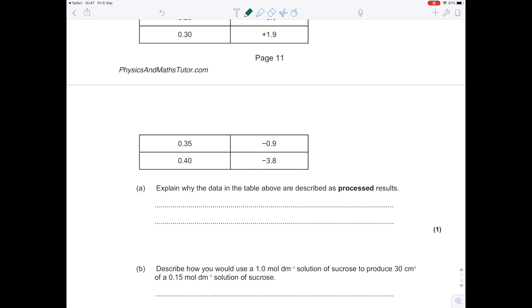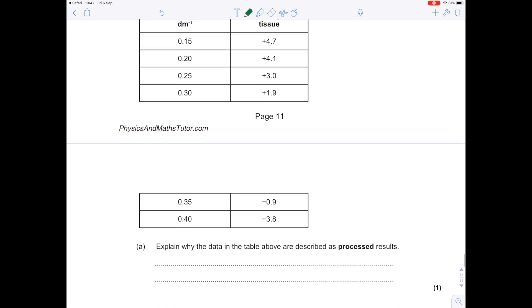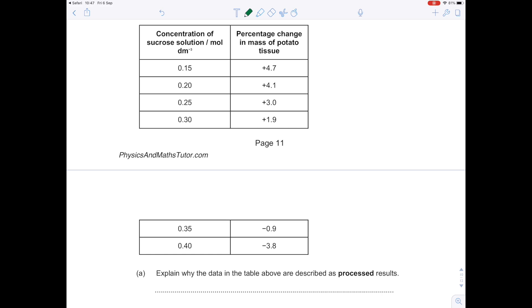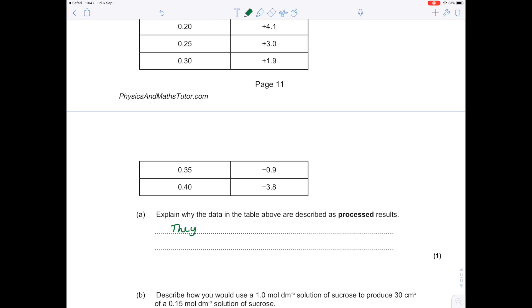Explain why the data in the table above are described as processed results. It means that he must have done something to them and they're not the raw data, because if it's a percentage change, you can't just work that out by weighing—you actually have to substitute it into an equation. So let's say they are calculations based on raw data.